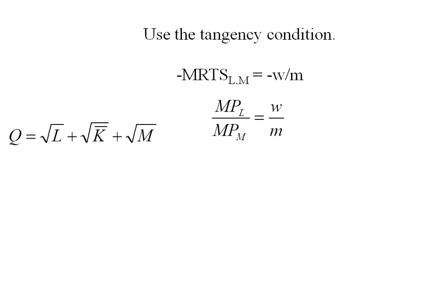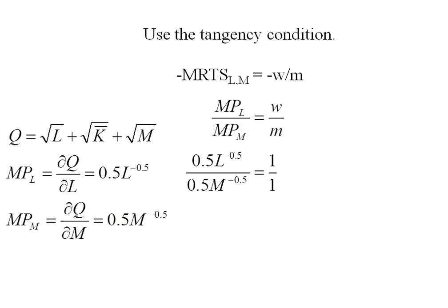To find my marginal products I'll go back to my original production function and partially differentiate with respect to L and with respect to M. This is a symmetric production function so we're going to get very similar answers. I'll plug that back in. Those point fives are going to cancel out. The reason I plugged in one for w and one for m is because all input prices were equal to a dollar. Simplifying I get M equals L.